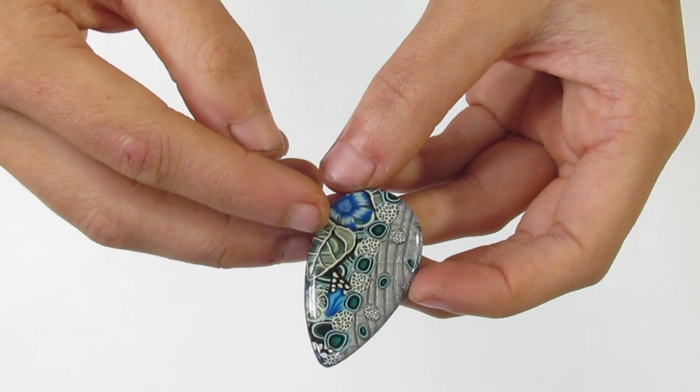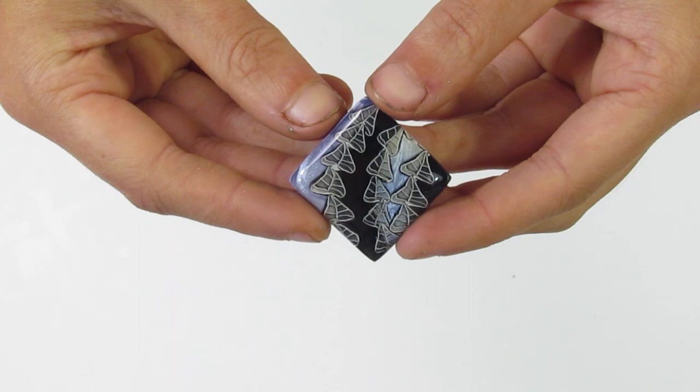And then this one's also got a leaf cane in it over here, which is a translucent leaf cane. Here's another one done with some translucent leaf canes.